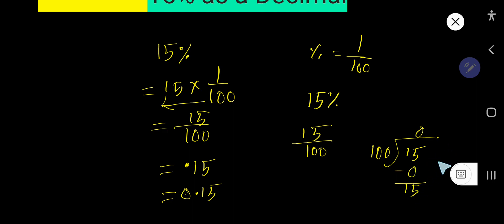15 is the remainder, but we can rewrite this. 100 doesn't go into 15, so we can rewrite 15 as 15.0. You can take any number of zeros after the decimal. Now bring down the first zero to get 150.